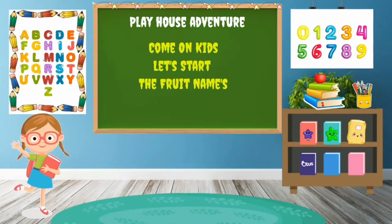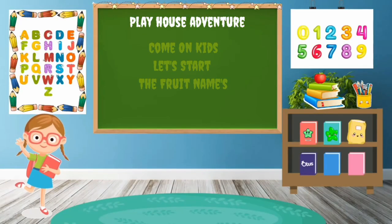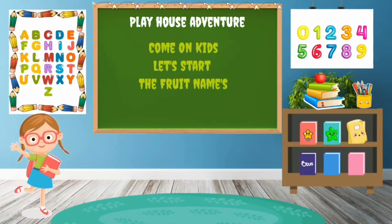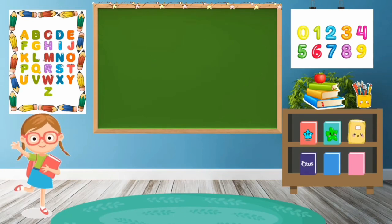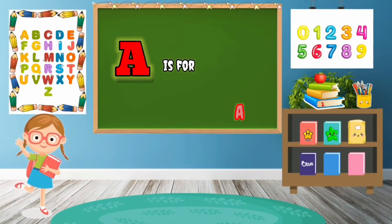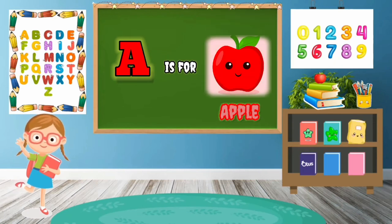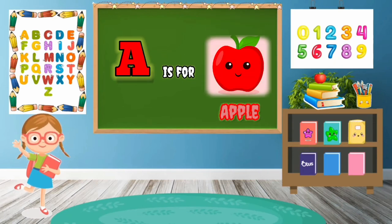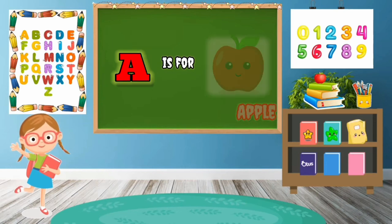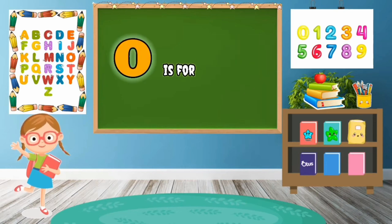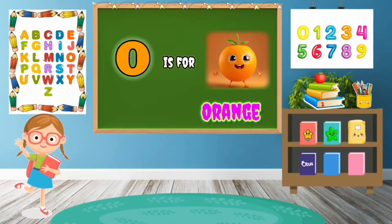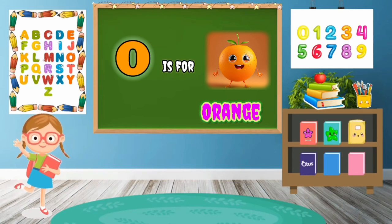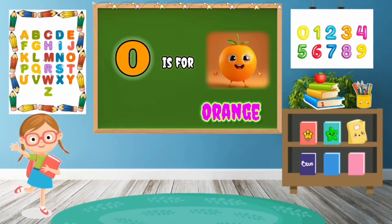Come on kids, let's start the fruit names. Okay, so please sing with me — fruit names! A is for Apple, A-P-P-L-E, Apple. O is for Orange, O-R-A-N-G-E, Orange.